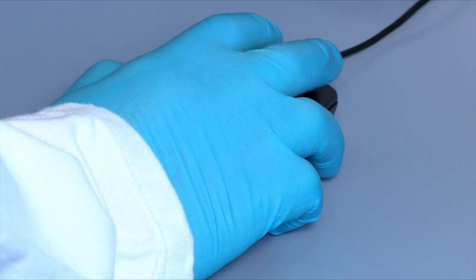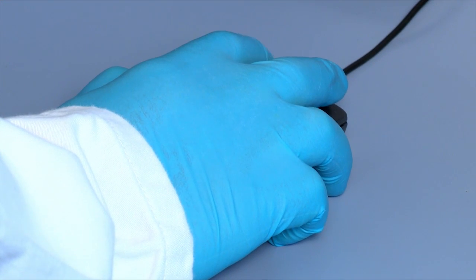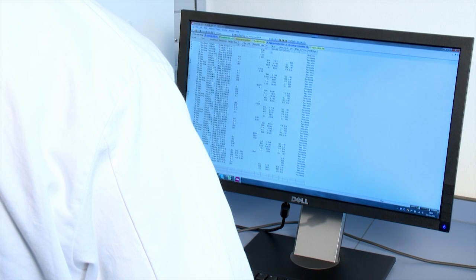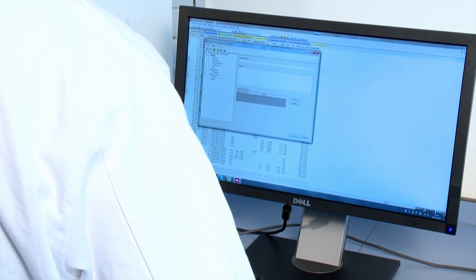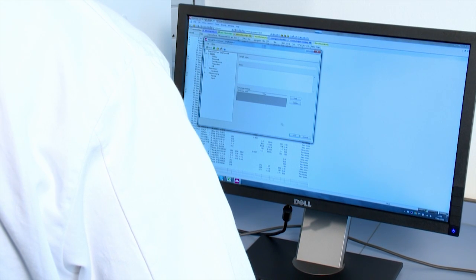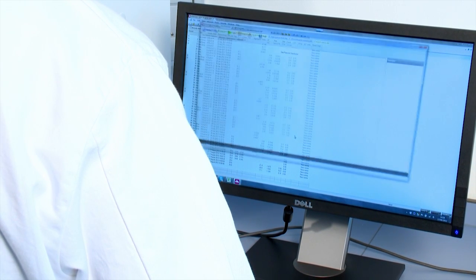The high sensitivity of Zetacizer Nano ZSP allows measurements of protein mobility at concentrations as low as 1 mg per ml, and as little as 20 microliters of sample is required. This video will show you how easy it is.